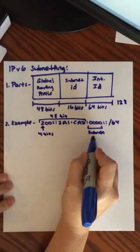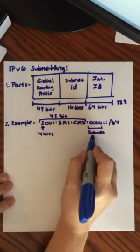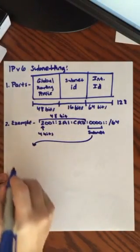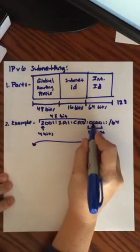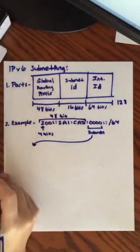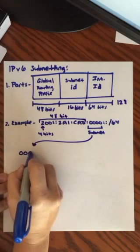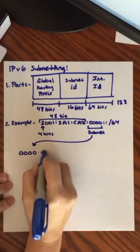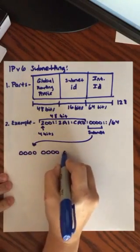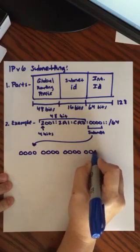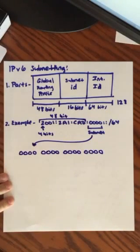Let's break up the subnet portion and look at it in binary rather than in hexadecimal. In binary, each one of these hex digits represents 4 bits. So there are 16 binary digits total across those four hex digits — that makes up the 16-bit subnet ID.